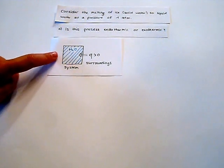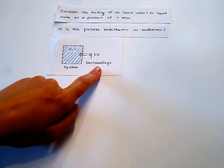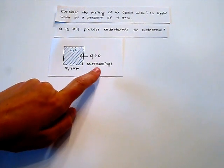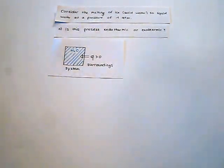Our system is the solid water and the surroundings are the heat we give to the system. So heat is the form of energy.